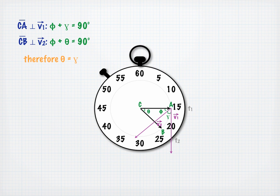From time 1 to time 2, the second hand sweeps out an arc of length d. d is the distance traveled by the end of the second hand. Distance is equal to speed multiplied by elapsed time, so we will call the length of this arc V delta t.